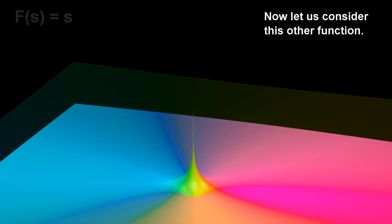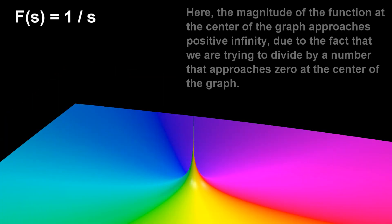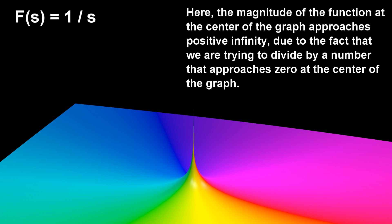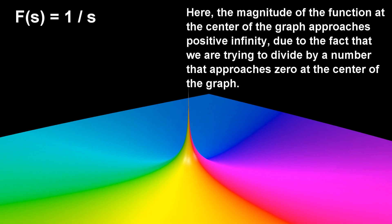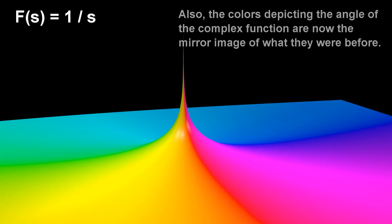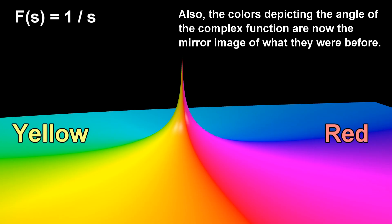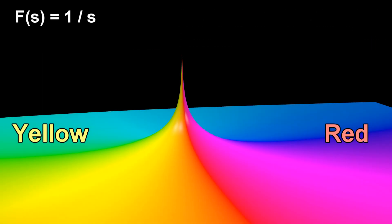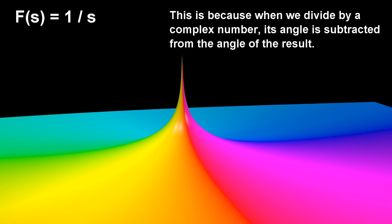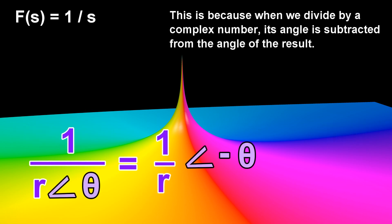Now, let us consider this other function. Here, the magnitude of the function at the center of the graph approaches positive infinity, due to the fact that we are trying to divide by a number that approaches zero at the center of the graph. Also, the colors depicting the angle of the complex function are now the mirror image of what they were before. This is because when we divide by a complex number, its angle is subtracted from the angle of the result.